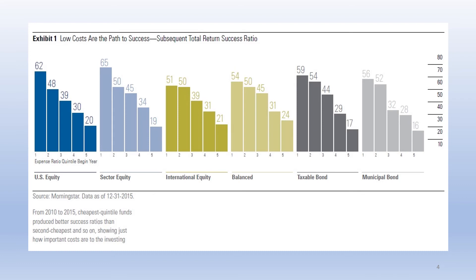What they found was that using expense ratios to choose funds helped in every asset class and every quintile during the 2010 to 2015 period. Looking at U.S. equities, the cheapest quintile had a total return success rate of 62%, then 48%, 39%, 30%, and 20%. That's consistent across the board — the cheaper the cost, the higher the probability of success. And in most cases, it's really only the cheapest 20% of funds that produce the biggest success ratios. Their conclusion was that the cost of a fund points investors to a better outcome for investor returns and load-adjusted returns.